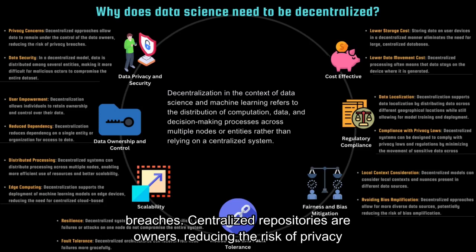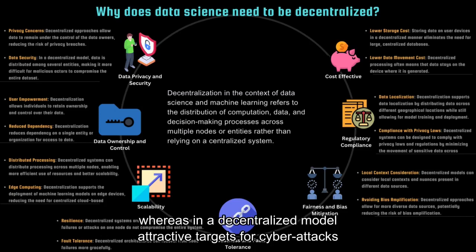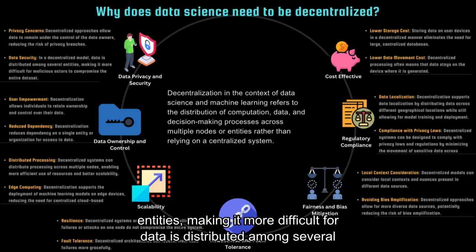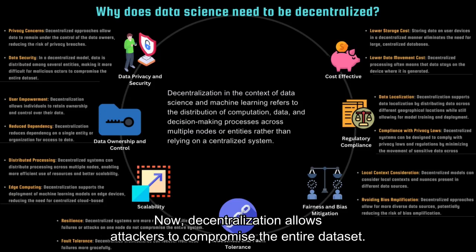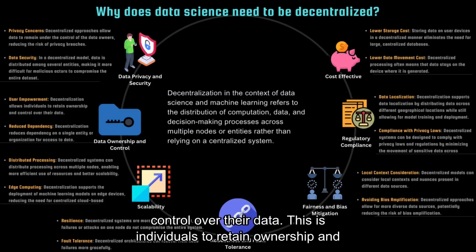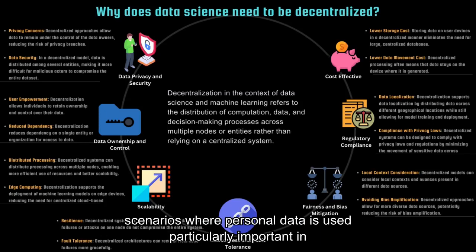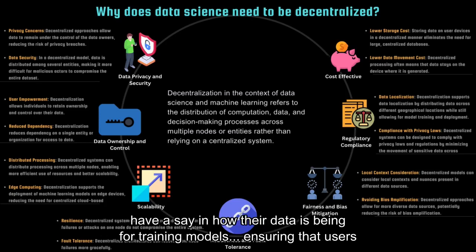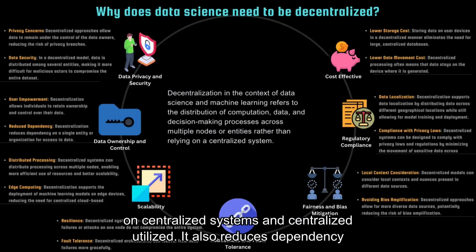Centralized repositories are attractive targets for cyber attacks. Whereas, in a decentralized model, data is distributed among several entities, making it more difficult for attackers to compromise the entire data set. Decentralization allows individuals to retain ownership and control over their data. This is particularly important in scenarios where personal data is used for training models, ensuring that users have a say in how their data is being utilized. It also reduces dependency on centralized systems and organizations.